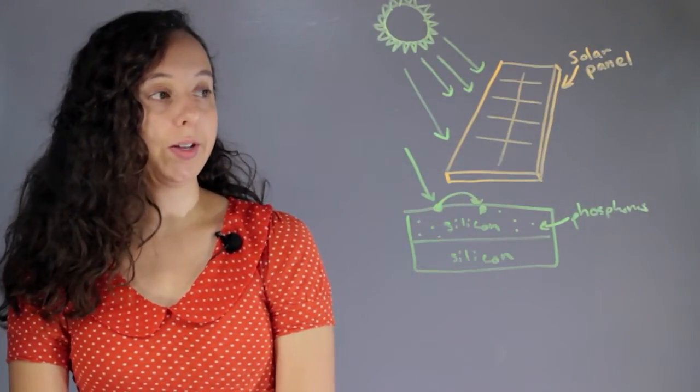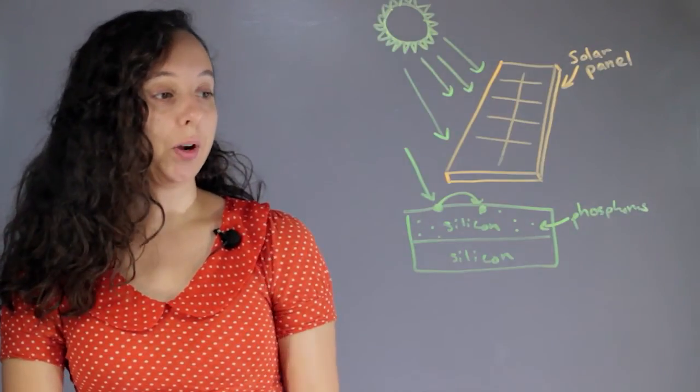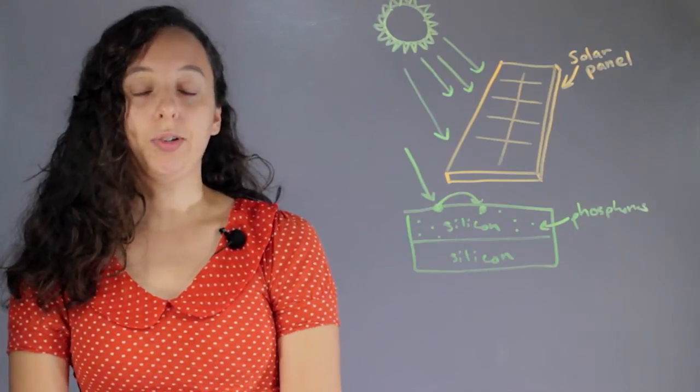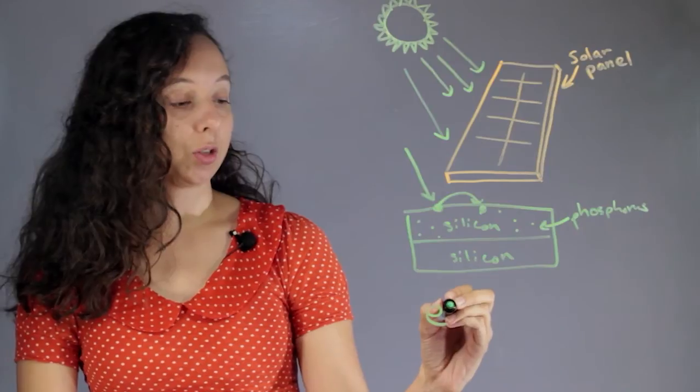And this isn't happening just once, it's happening thousands and millions of times. And you see you have a bunch of electrons moving around. And this is actually what electricity is made of because all electricity is just moving electrons.